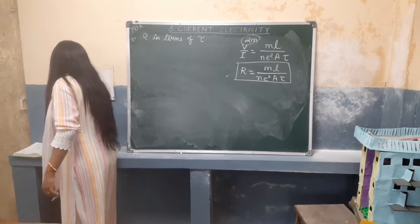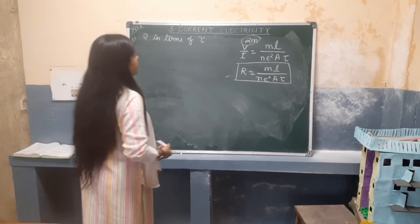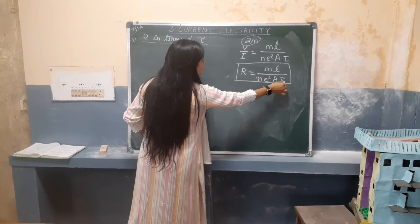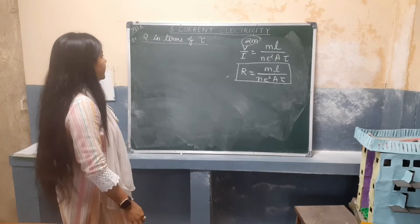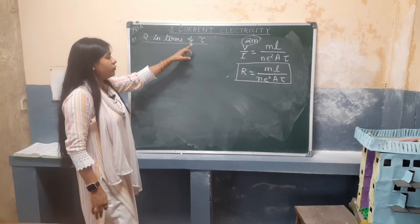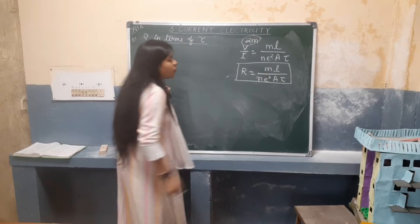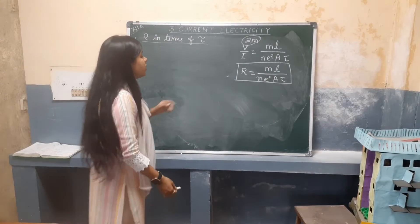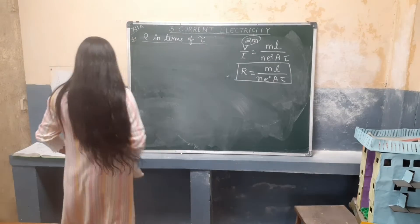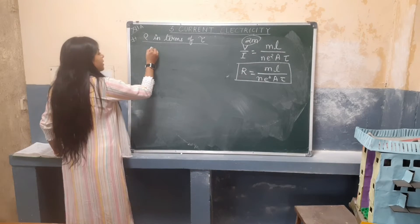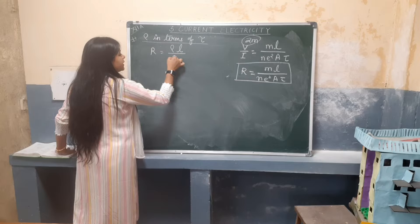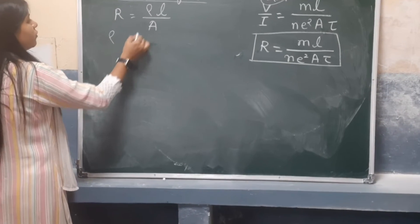Students, from our earlier topic on resistance and Ohm's law in terms of relaxation time, drift velocity, and current electron density, we will now derive resistivity in terms of tau. We have the relation R = mL/(ne²Aτ). We can find the relation for resistivity using R = ρL/A, and from here we can find the value of rho.